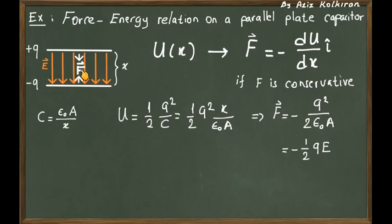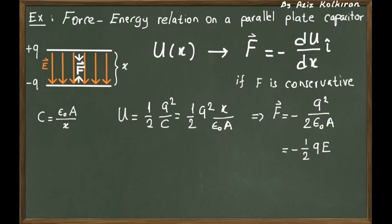The electric field E is the charge divided by the area of one plate times ε₀. So we may express q divided by (A × ε₀) as the strength of the electric field. In that case, you will notice that the force is not equal to just q times E, but rather one half q times E. The force is (1/2) × q × E, using the fact that E = Q / (ε₀ × A).